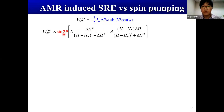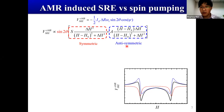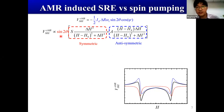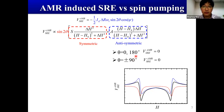Due to this phase shift, the AMR-induced rectification has both symmetric and anti-symmetric line components. Equally importantly, this rectification is proportional to sin(2θ), meaning it changes sign when we reverse the magnetization — it is symmetric with the magnetization, V(H) = V(-H). Also, when theta equals 0°, 180°, or 90°, the spin rectification due to AMR is zero.